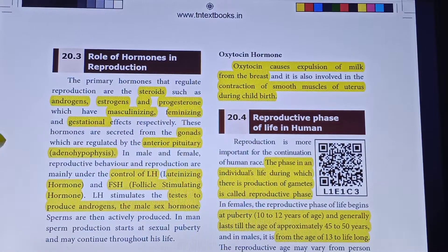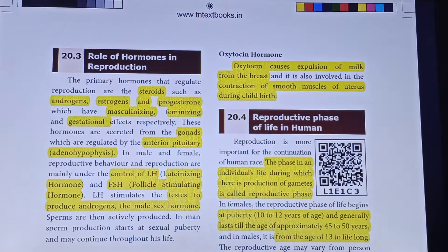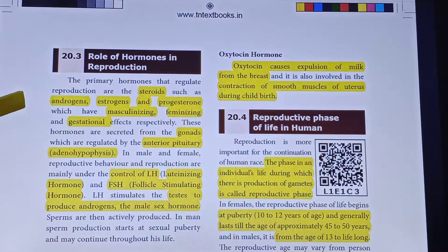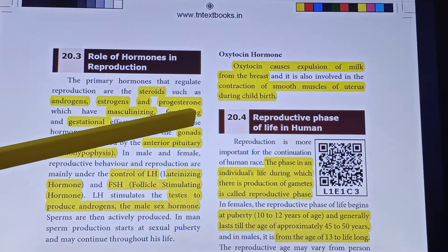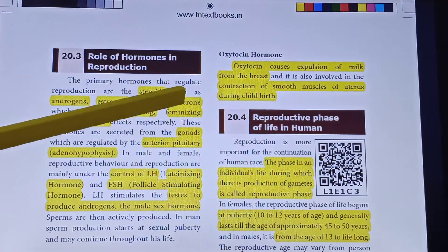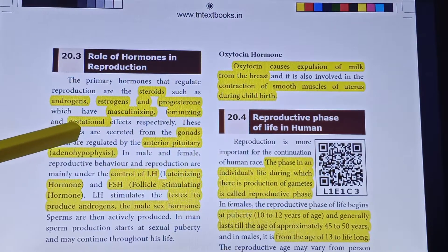The primary hormones that regulate reproduction are the steroids. In our body, we are going to secrete hormones that are steroids. The hormones secreted are: androgen, which secretes male characters; estrogen, which secretes feminizing characters; and progesterone, which has a gestational effect — that is, effects during the pregnancy period.